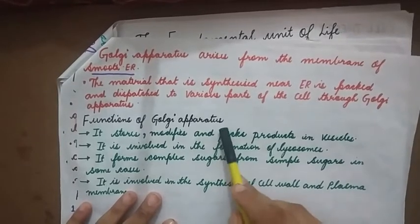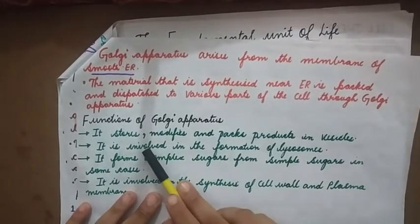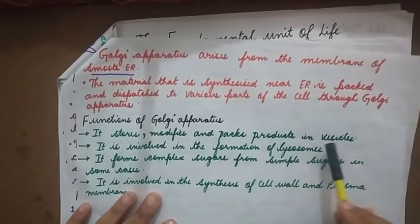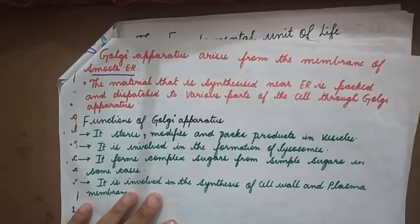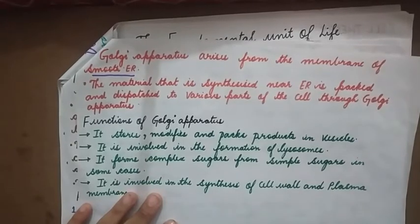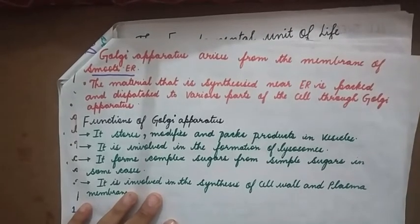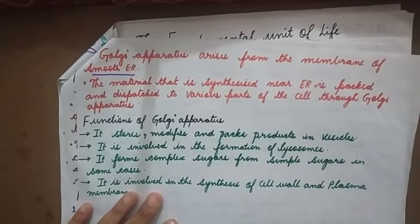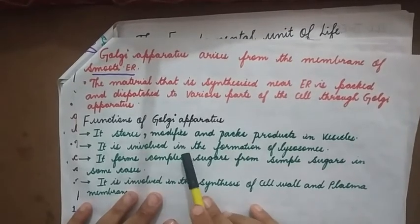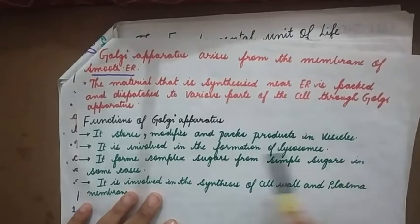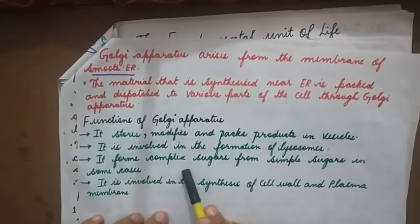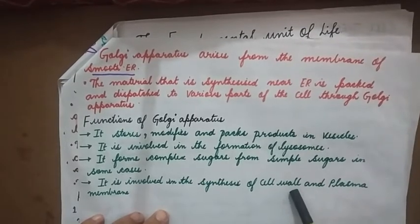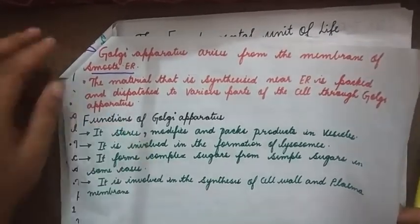Functions of Golgi apparatus: It stores, modifies, and packs products in vesicles — it acts like a packaging material. The material being synthesized is packed and supplied to the target organ by the Golgi body. It is also involved in the formation of lysosomes, forms complex sugars from simple sugars in some cases, and is involved in the synthesis of cell wall and plasma membrane.